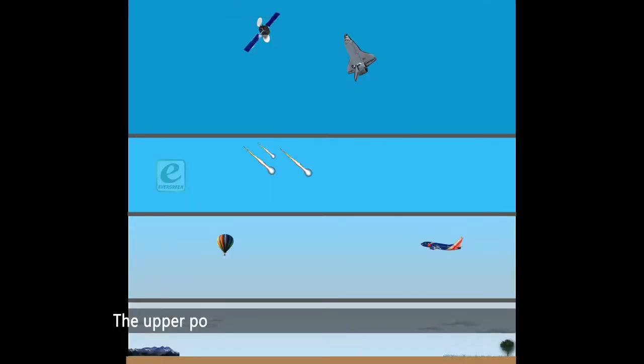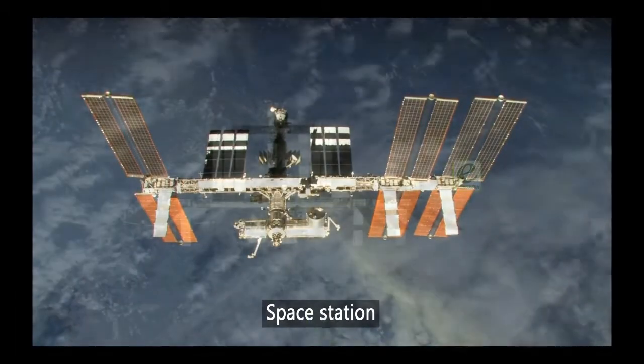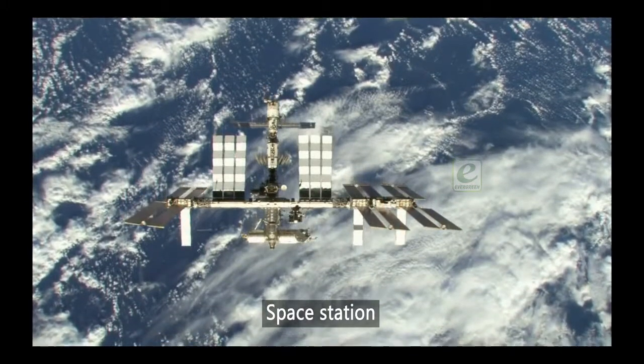The upper portion of the thermosphere is called the exosphere. Space shuttles and the International Space Station both orbit Earth within the thermosphere.